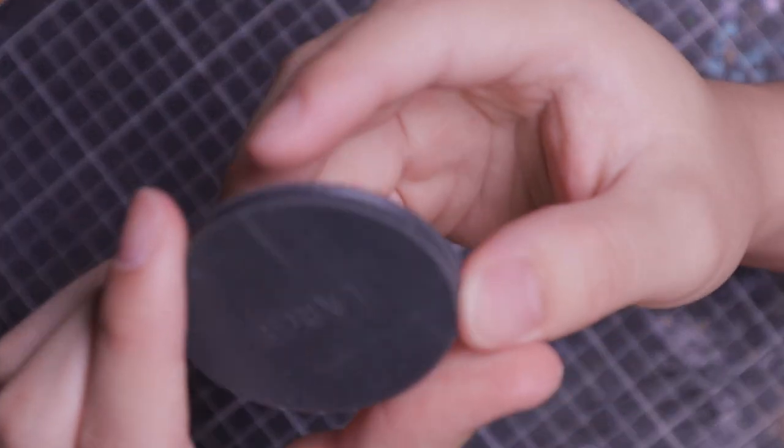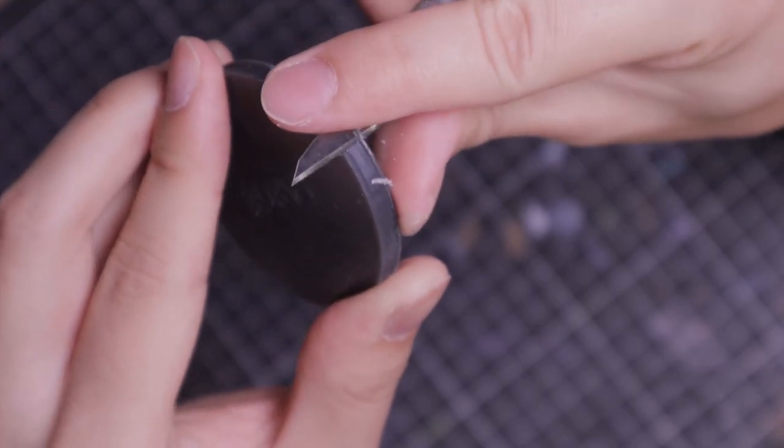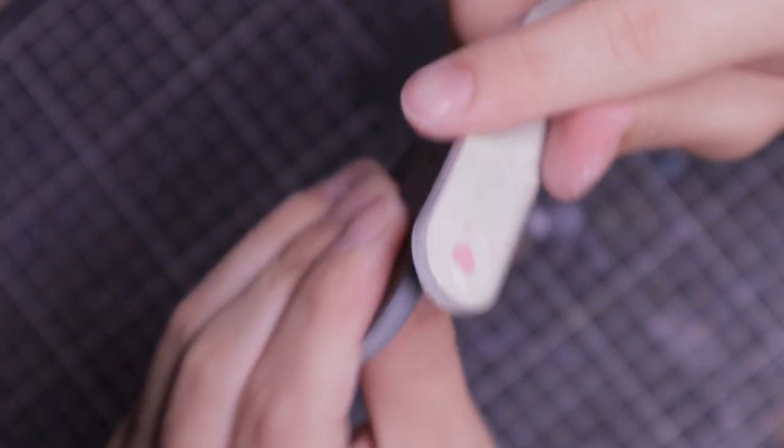I went with the large base since it suited the mini and the build I'm going for. I had to clean the base with a hobby knife to remove excess material. I also filed and gave it a polish.